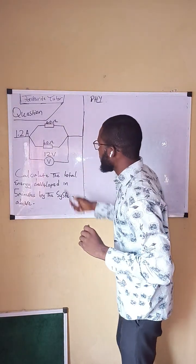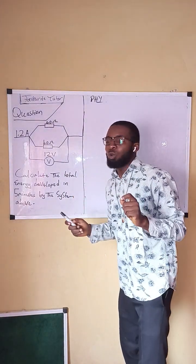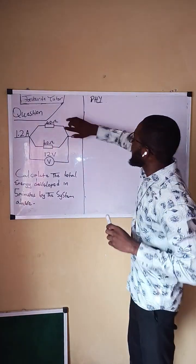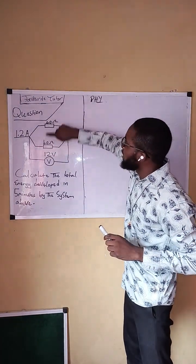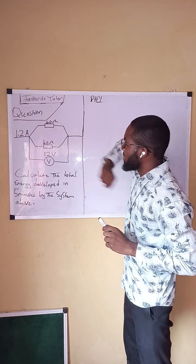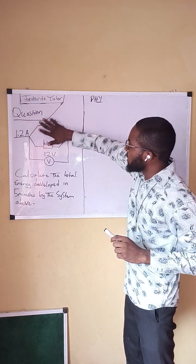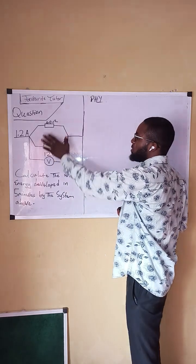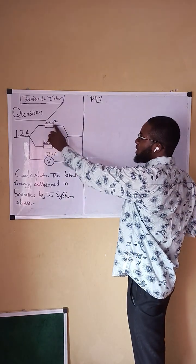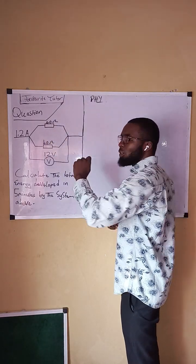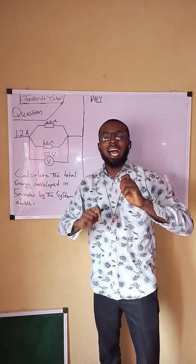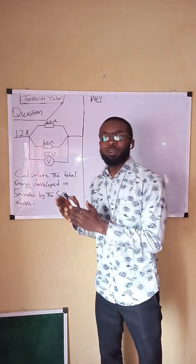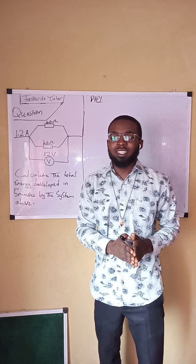To get the total energy developed by the system, we first need to find the total resistance. Taking a good look at the circuit, 40 ohms is in parallel with 40 ohms. Remember in our previous class under the topic 'Arrangement of Resistors in an Electrical Circuit,' we covered series and parallel connections.